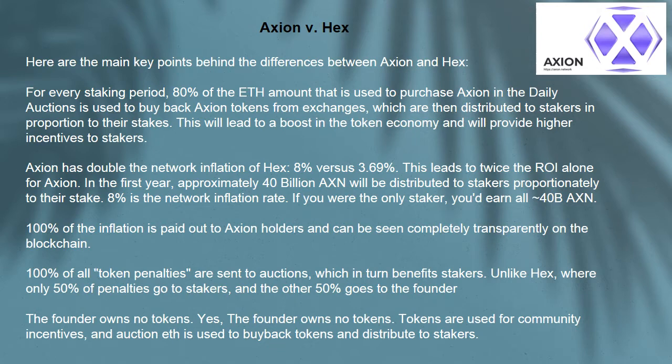Axion has double the network inflation of HEX — 8% versus 3.69% — leading to twice the ROI for Axion. In the first year, approximately 40 billion AXN will be distributed to stakers proportionately to their stake. 8% is the network inflation rate; if you were the only staker, you'd earn all 40 billion AXN. 100% of the inflation is paid out to Axion holders and can be seen completely transparently on the blockchain.